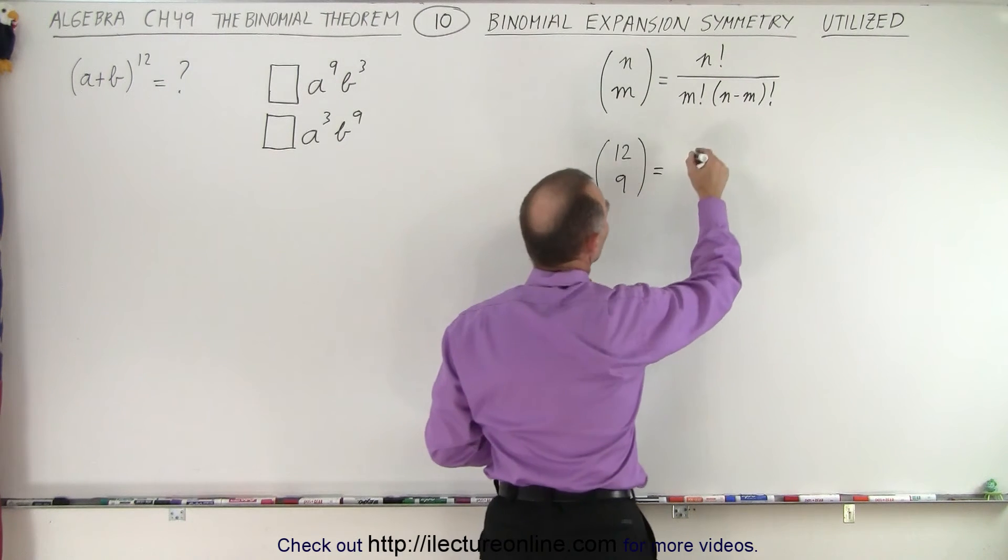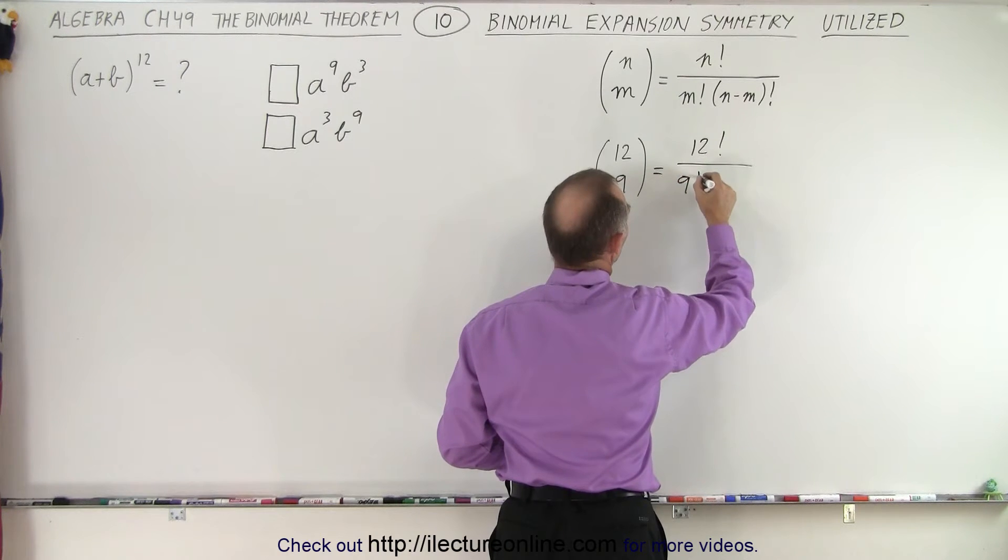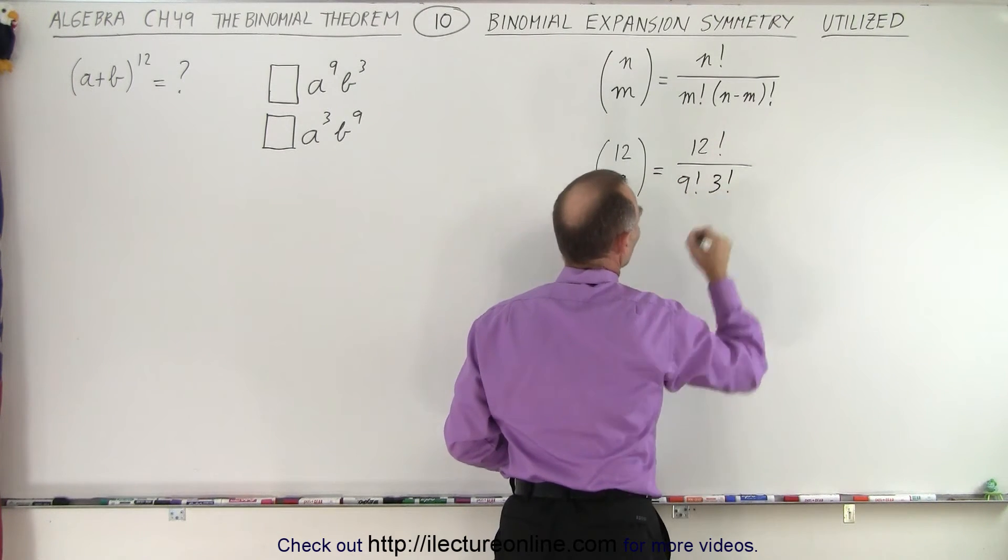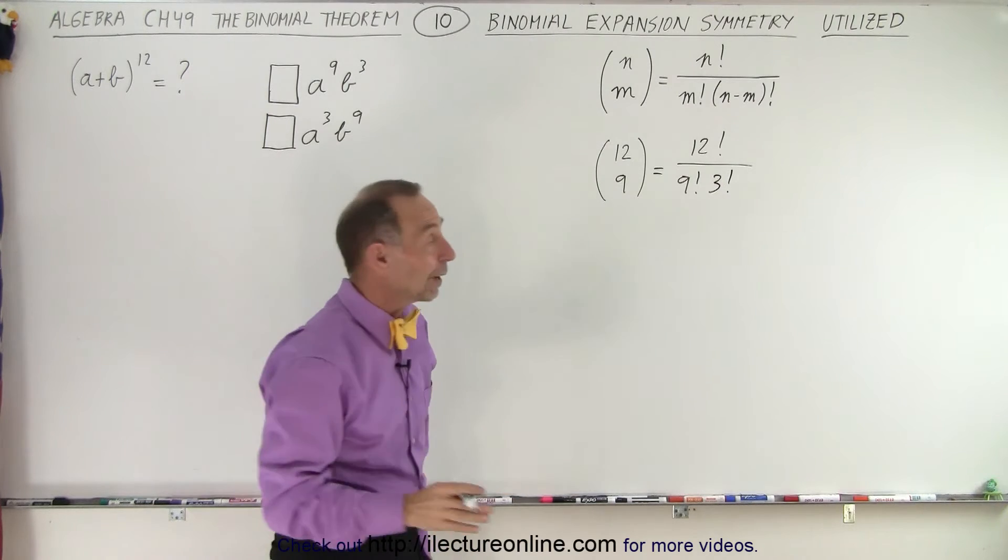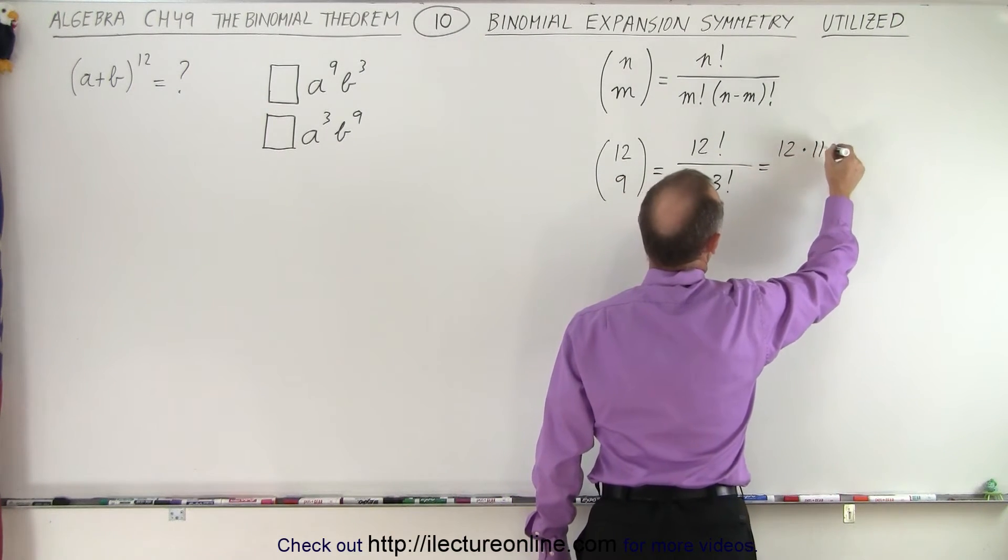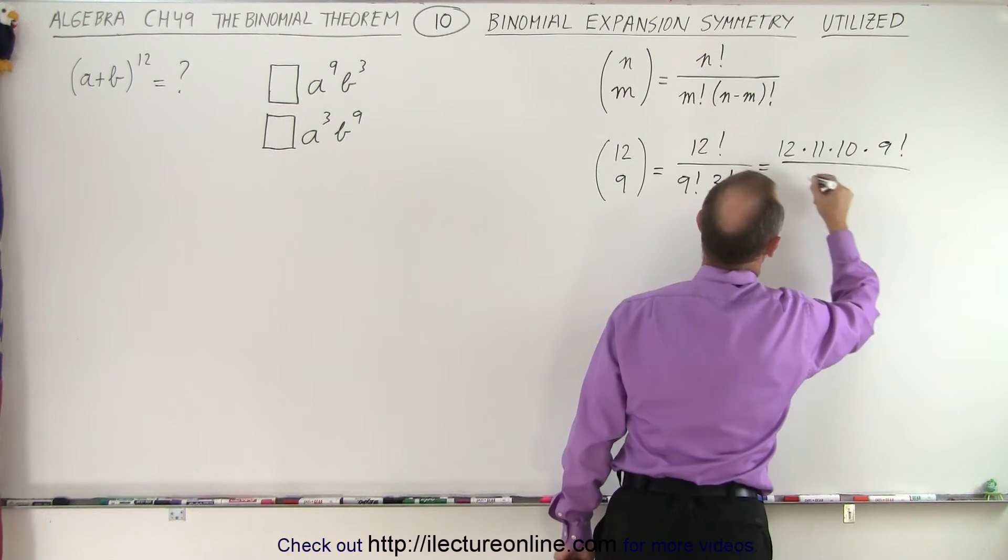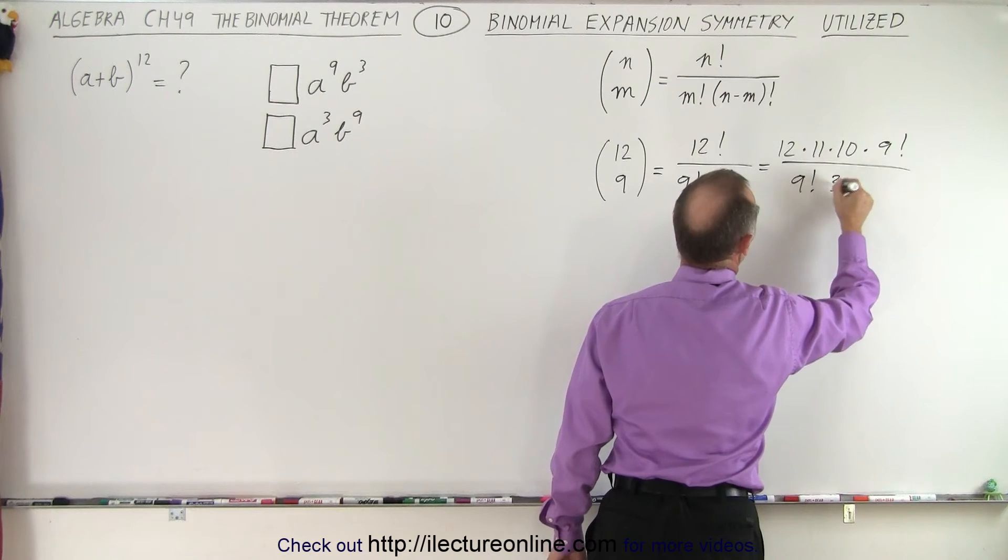So to do that we get 12 factorial divided by 9 factorial times the difference between those two which is 3 factorial. So now we can rewrite this as follows. This can be written as 12 times 11 times 10 times 9 factorial divided by 9 factorial times 3 factorial.